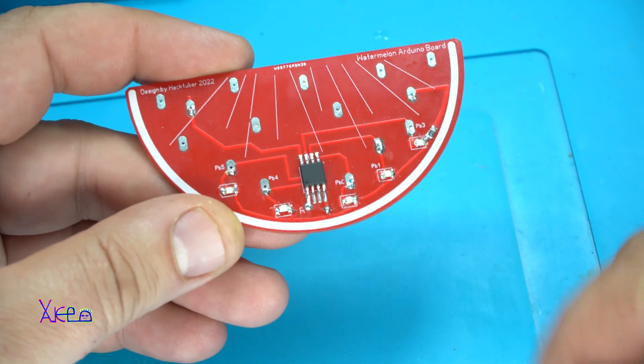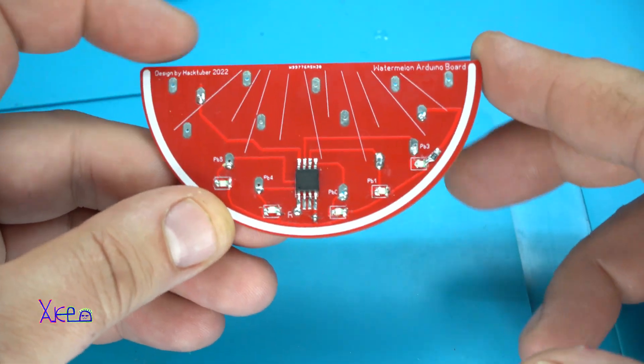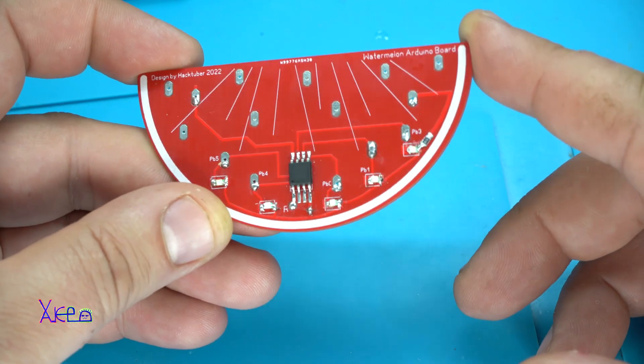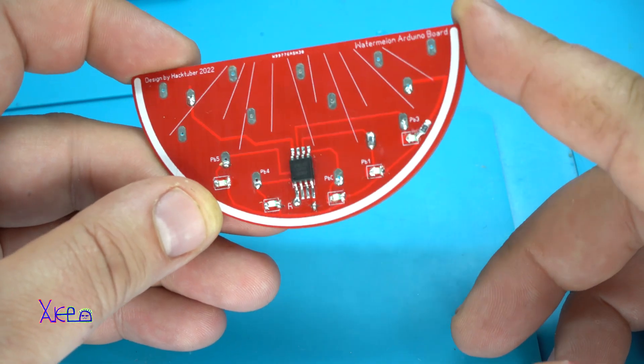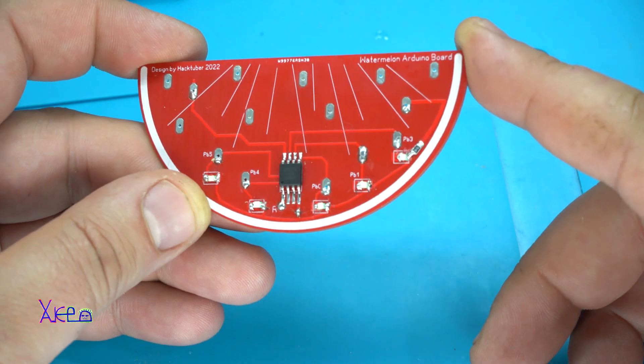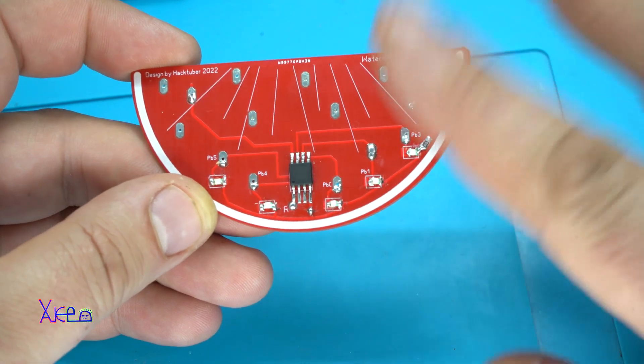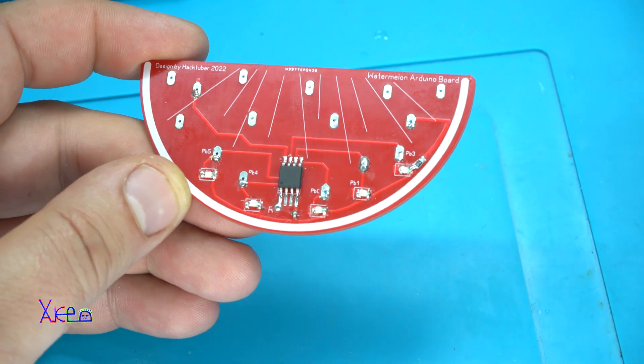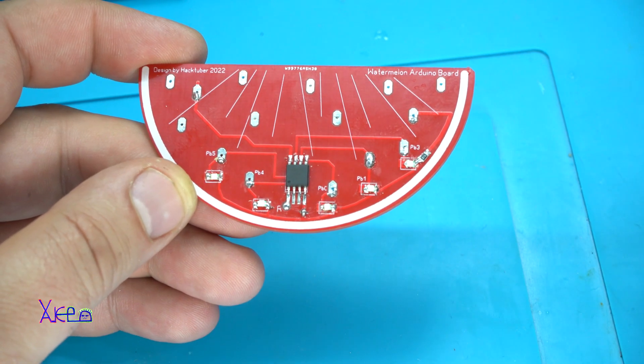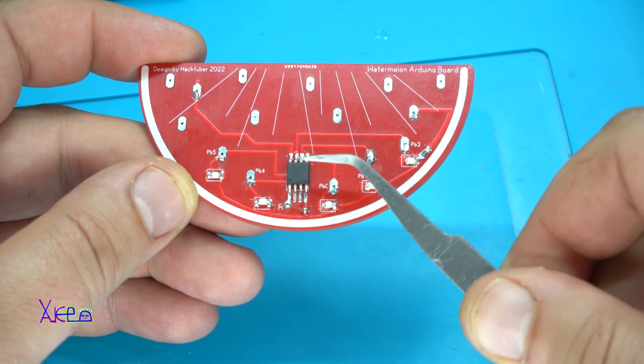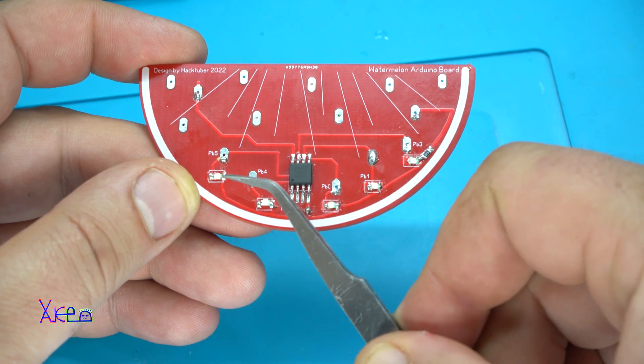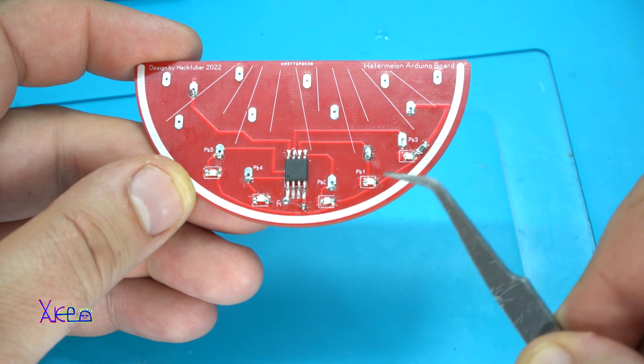You saw the first example with this watermelon Arduino board that was a piezo song and for the second example I have made a LED chaser beside the microchip. Here it is the five LEDs.